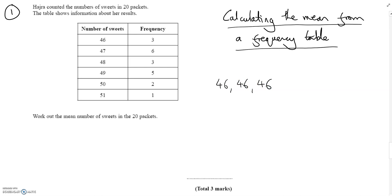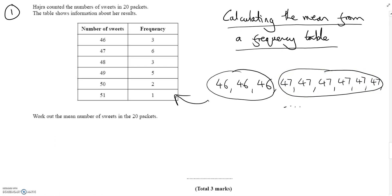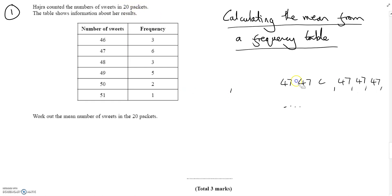Each number represents the number of sweets in a particular packet. We've then got 47 sweets in six packets, so we could write 47 six times. We can see already this is getting quite laborious, and we'd carry on and on, so it's much easier to have this written in tabular form. So there are three packs with 46 in, six packs with 47 in, three with 48, five with 49, all the way up to 20 numbers in total.